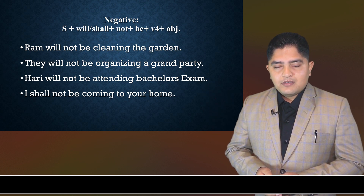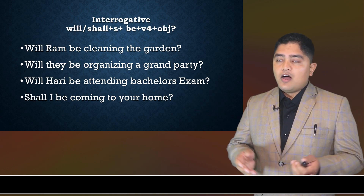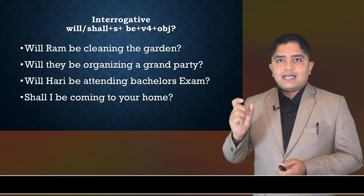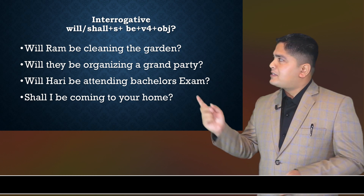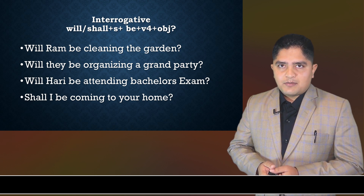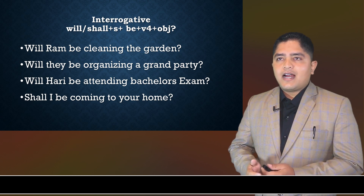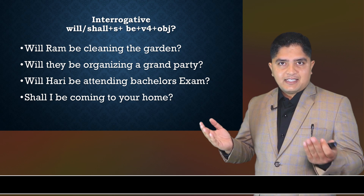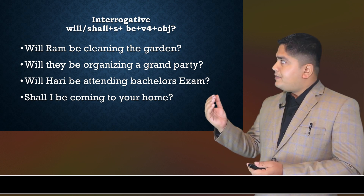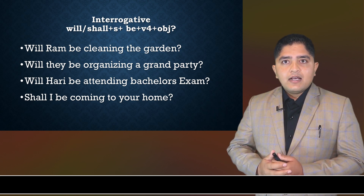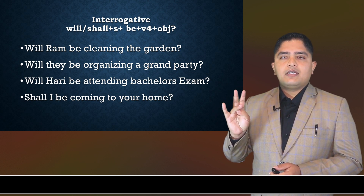Now let's see the interrogative or yes/no question structure of future continuous tense. The auxiliary verb comes first. The structure is: Will/Shall + subject + be + verb(ing) + object. For example: 'Will Ram be cleaning the garden?' 'Will they be organizing a grand party?' 'Will Hari be attending bachelor's examination?' 'Shall I be coming to your home?'